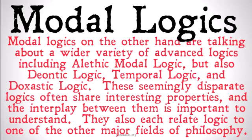They are also important because they each relate logic to one of the other major fields of philosophy. Deontic logic, of course, relates to ethics. Temporal logic relates to time and therefore metaphysics. And doxastic logic, of course, relates to epistemology and theories of belief and knowledge. So all of these modal logics have important relations to our other types of philosophy, and they're kind of the connecting lines between those kinds of philosophy and logic.